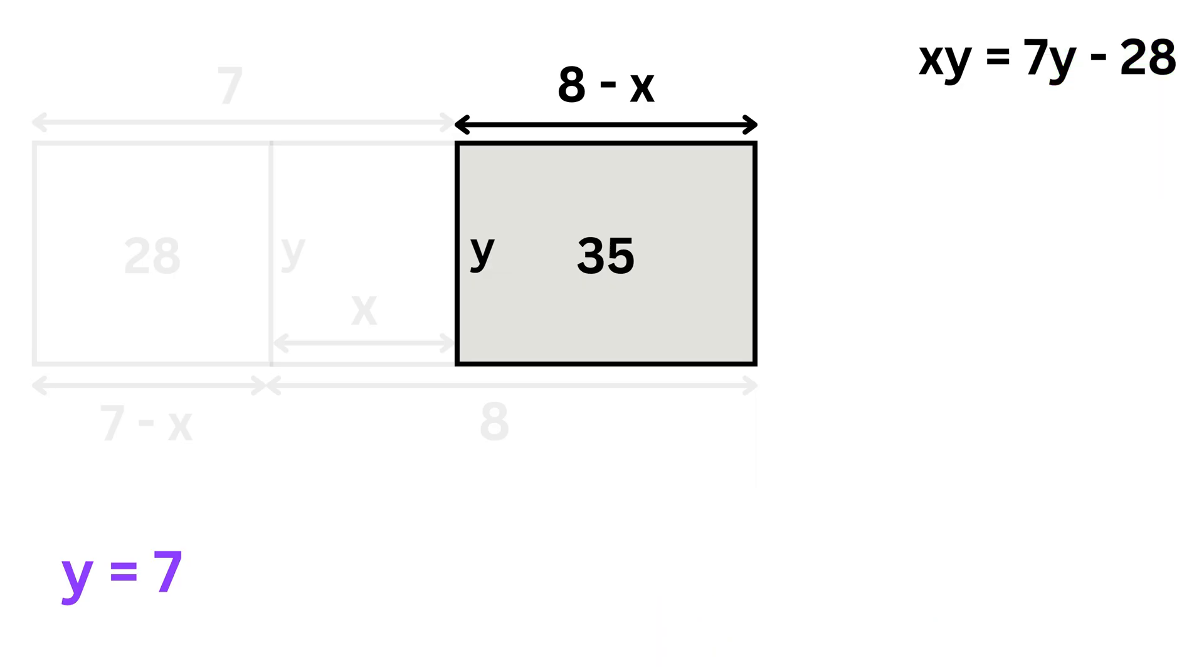Now, once we know y, we can substitute it back into one of our earlier equations. From the first one, xy equals 7y minus 28. Substituting y equals 7, we get x times 7 equals 7 times 7 minus 28. On simplifying, we get 7x equals 49 minus 28, which equals 21. Dividing both sides by 7, we get x equals 3.